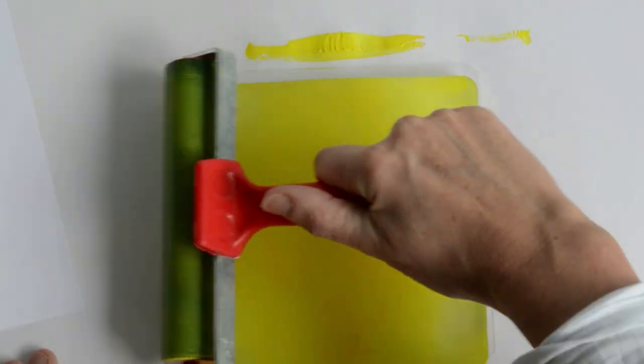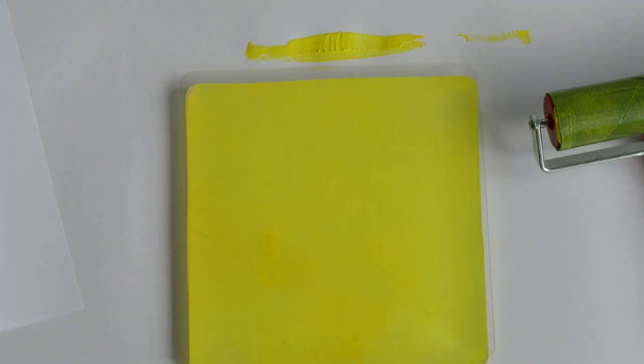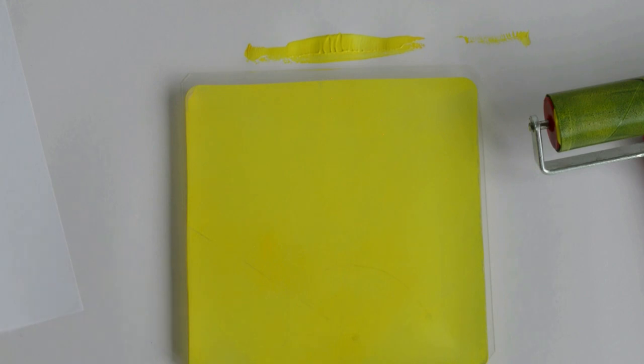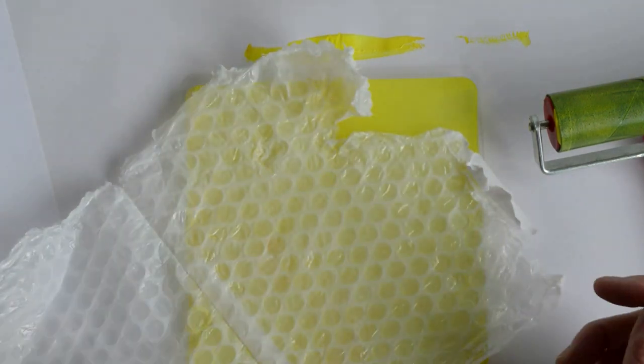And then I'm just going to have a play. There's a variety of materials from around the home. This is a packaging envelope that came through the post which has got bubble wrap on the inside. I love circles, so I'm not going to waste that bubble wrap.